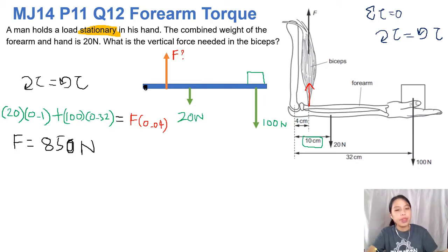There we go. So this means the muscle, the poor bicep muscle, has to exert a force of 850 newtons, which is about, wow, if you change that to kg, that's about 85 kg. So 850 newtons by the bicep muscle.